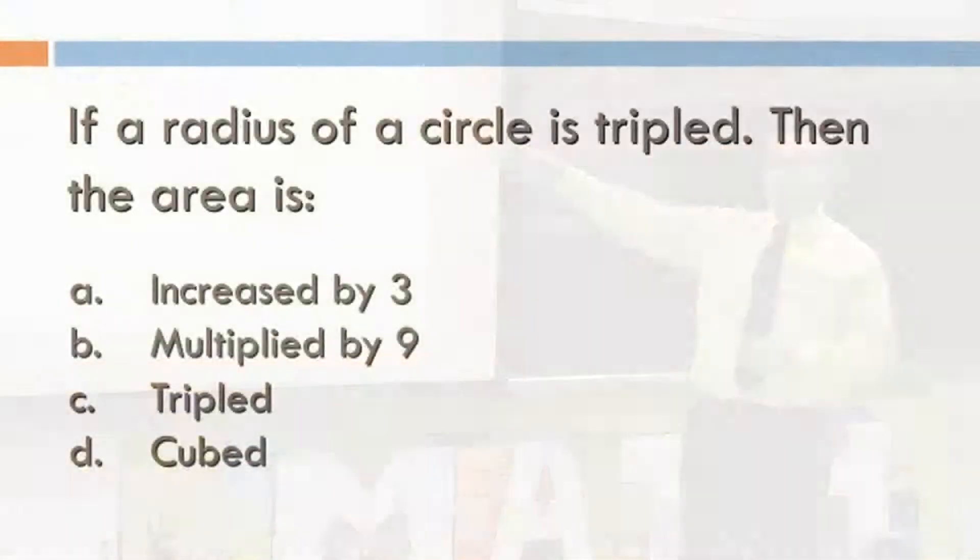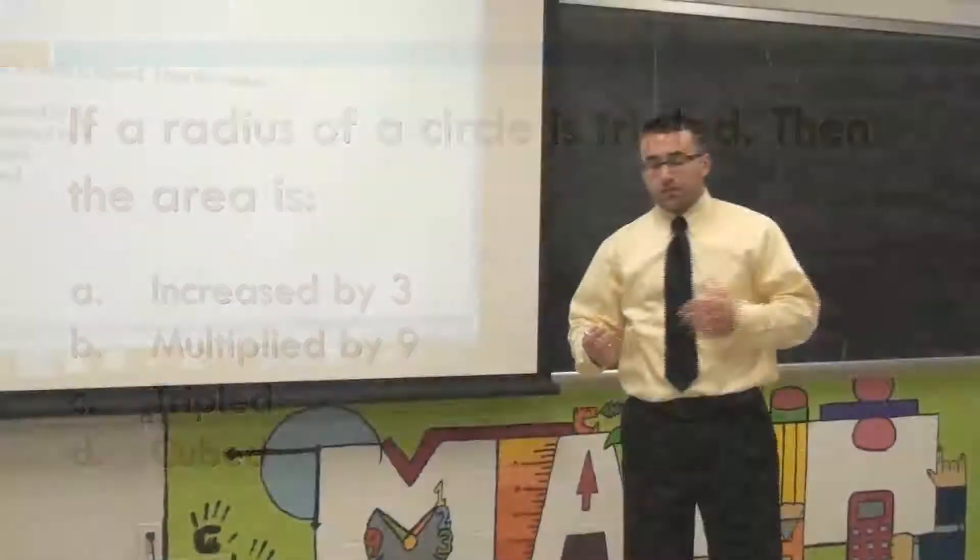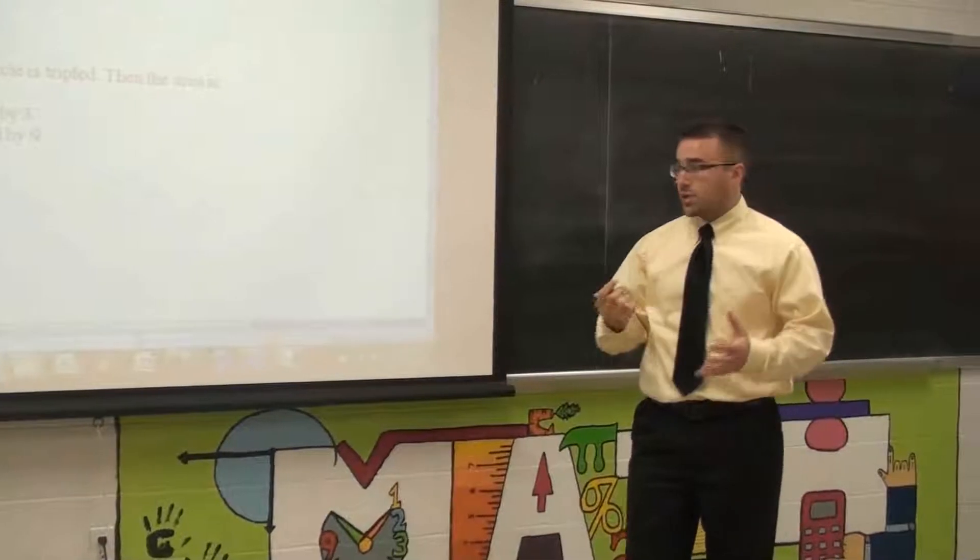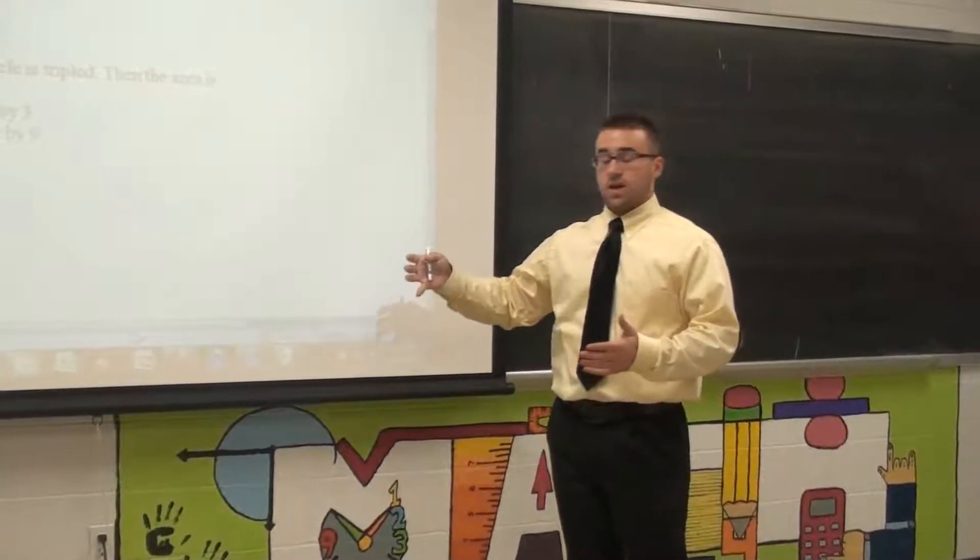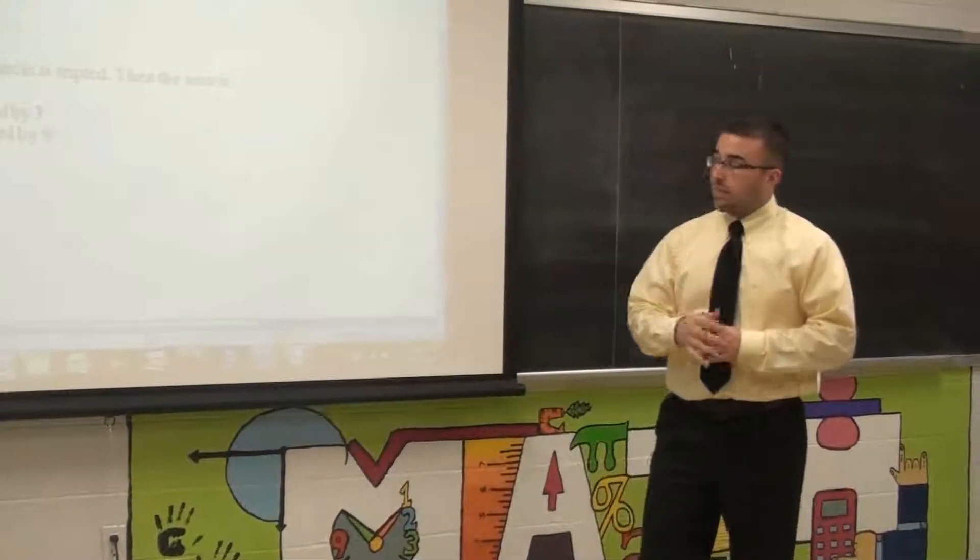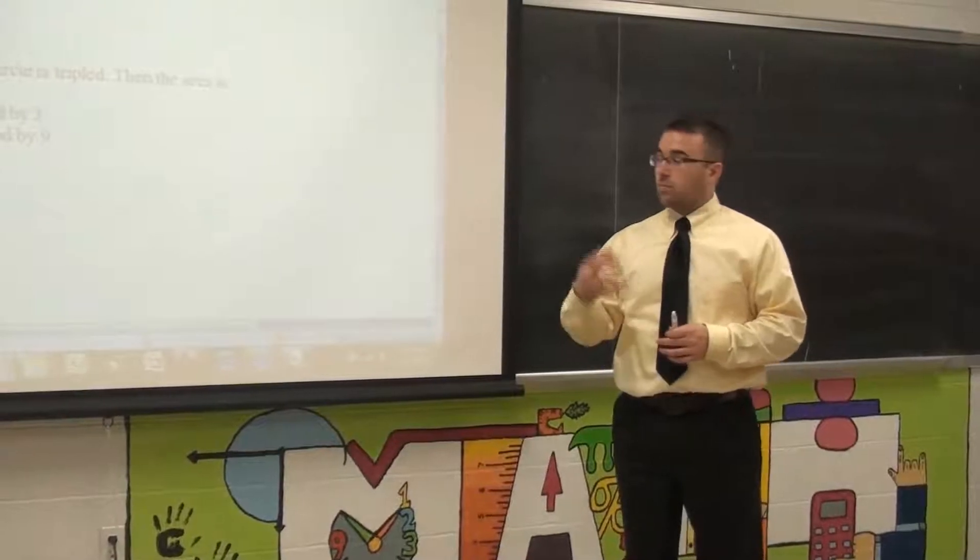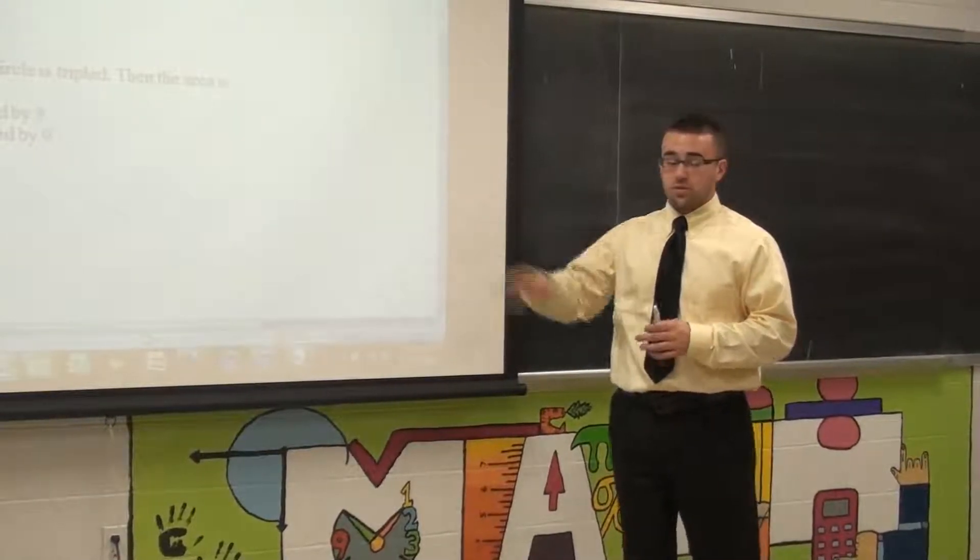So a question that you might possibly see on the HESPA would read as: if a radius of a circle is tripled then the area is A, B, C, or D. Now first inclination as soon as you hear the word tripled we think three. You want to try and get away from that assumption, that quick idea to go right to answer A.